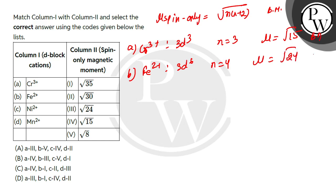C ka likha hua hai Ni²⁺. So configuration ho jayegi 3d⁸. Number of unpaired electrons ho jayegi 2. So μ ki value...